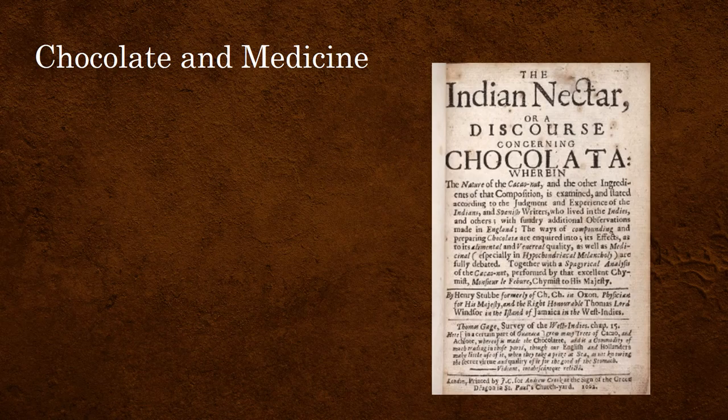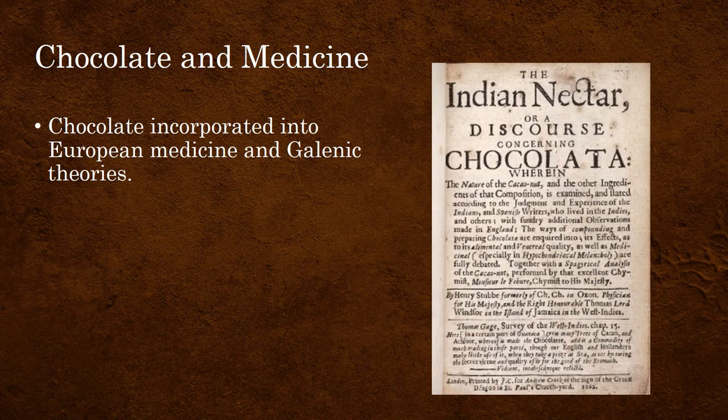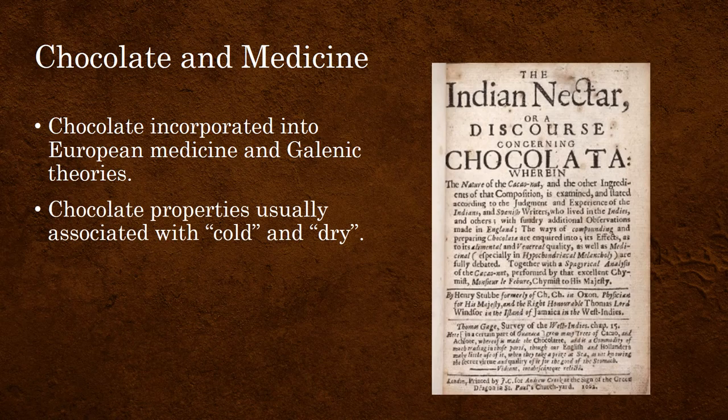It is in this context that chocolate was incorporated into European medicine and Galenic theories. It became a medicine which could help restore balance in the humors, just like bloodletting, but perhaps a little bit more enjoyable. Chocolate's properties were usually associated with cold and dry, so in that sense it could be used to offset a condition which was believed to be caused by an excess of heat or moisture.